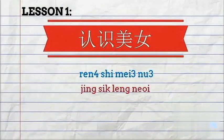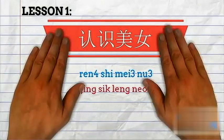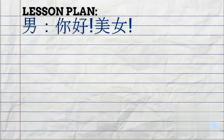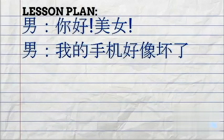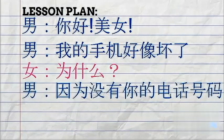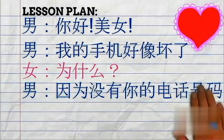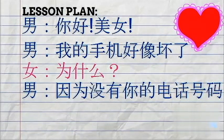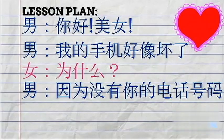认识美女, lesson one, 形式美女. Alright, so here's the lesson plan for today. 你好美女, 我的手机好像坏了 — 为啥? 因为没有你的电话号码. And if you already know how to say this in Mandarin, you can skip over to the next video. If not, tune in.